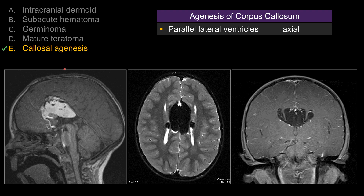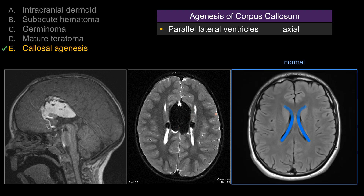One of the features quite classic for agenesis of the corpus callosum is on axial view, you see this parallel appearance of the lateral ventricles. For a normal case, the lateral ventricle has a crescent shape, and typically the body comes closer toward the midline. In the setting of agenesis or severe dysgenesis of the corpus callosum, you will see this parallel appearance of the body of the lateral ventricles, and they are typically much more widened compared to normal.